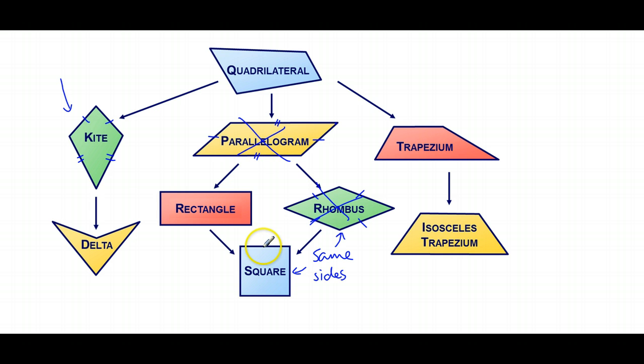A square has got one, it's got a line of symmetry. Let's get a pen. It's got a line of symmetry down the middle.